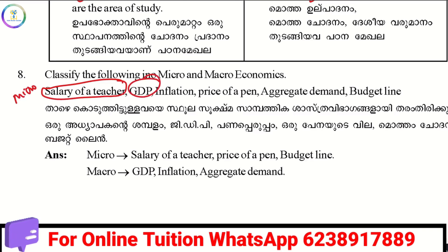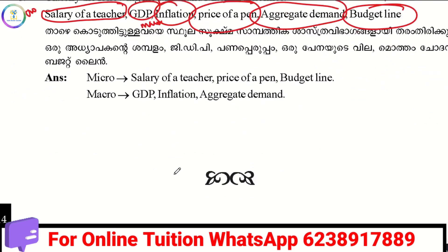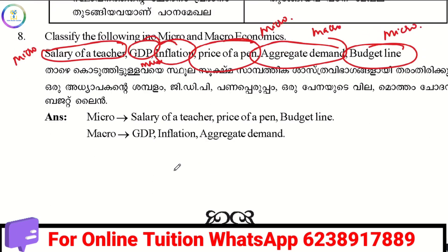GDP and inflation are general economy-wide items — that is macroeconomics. The price of a pen is an individual unit — that is microeconomics. Aggregate demand refers to total demand — that is macroeconomics. A budget line is a single-item concept — that is microeconomics. In summary, the macro covers GDP, inflation, and aggregate demand.